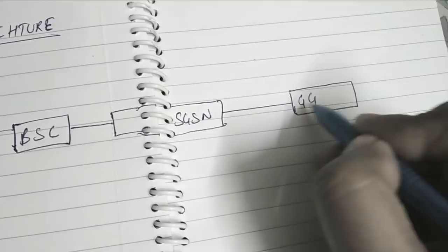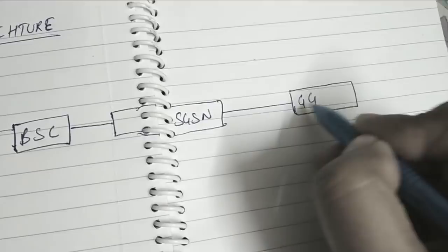That is GGSN, Gateway GPRS Supporting Node. And then it is connected to the ISP Network.